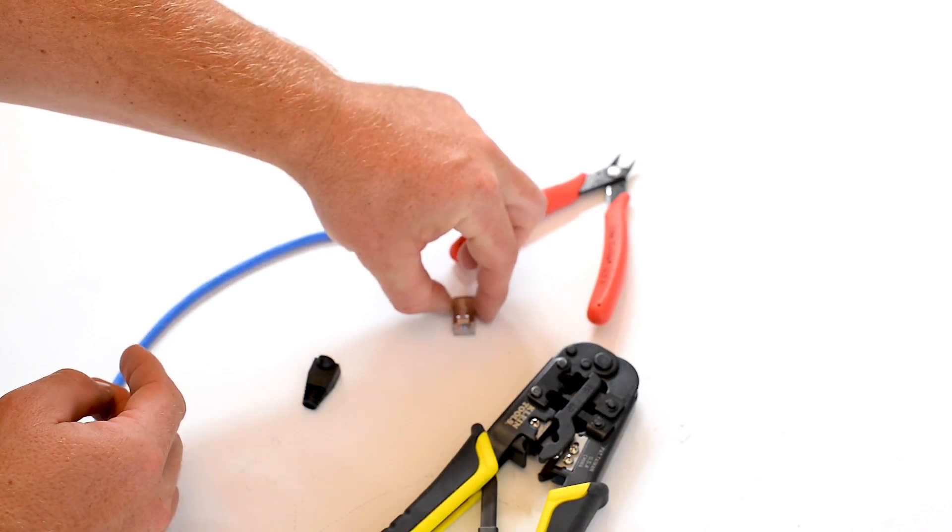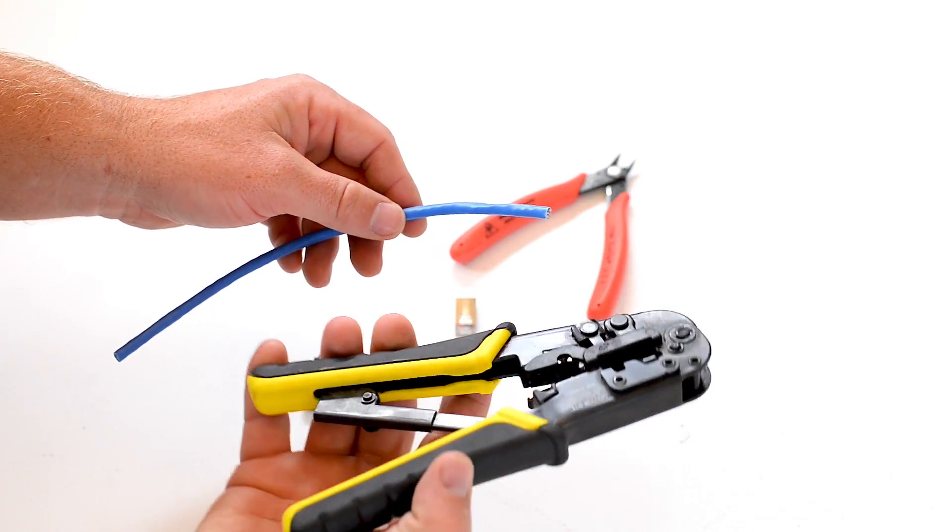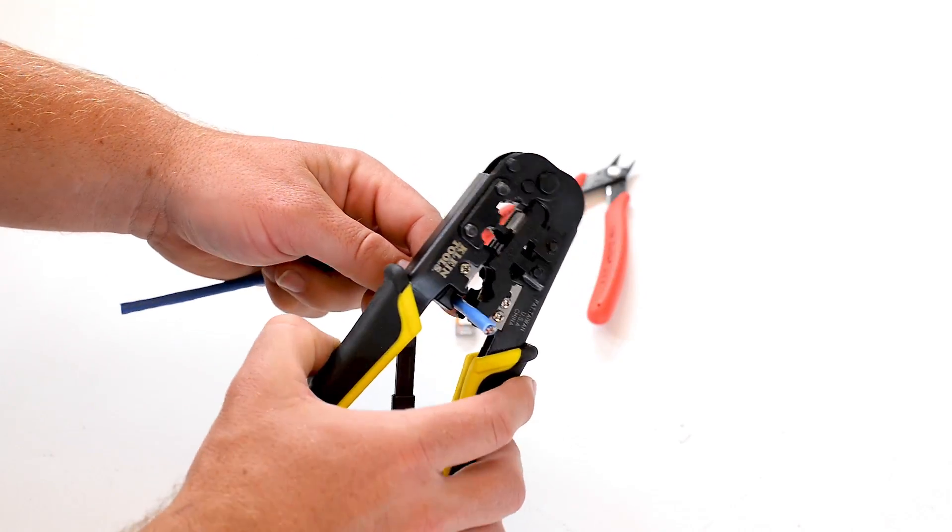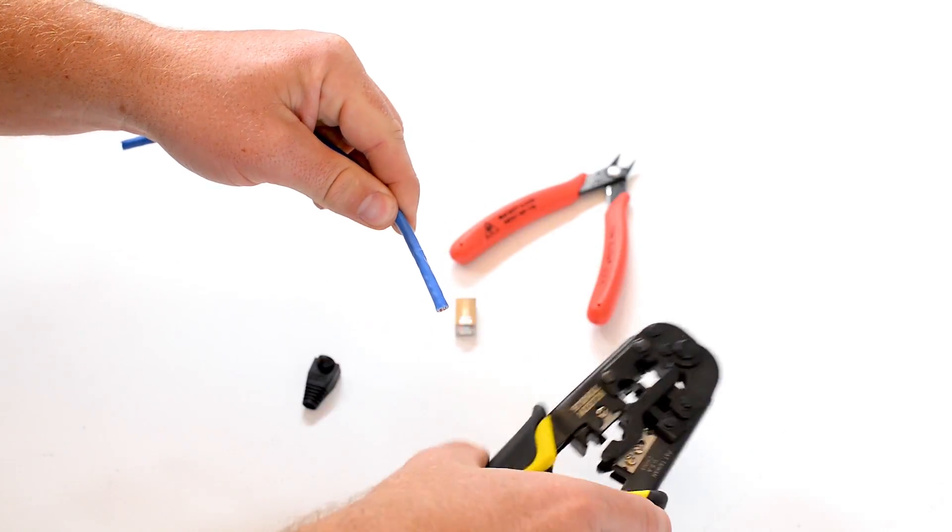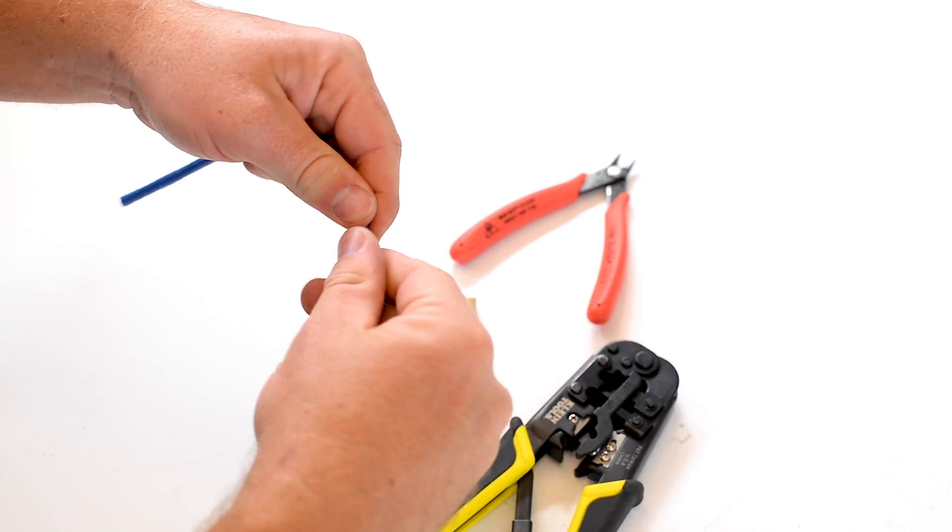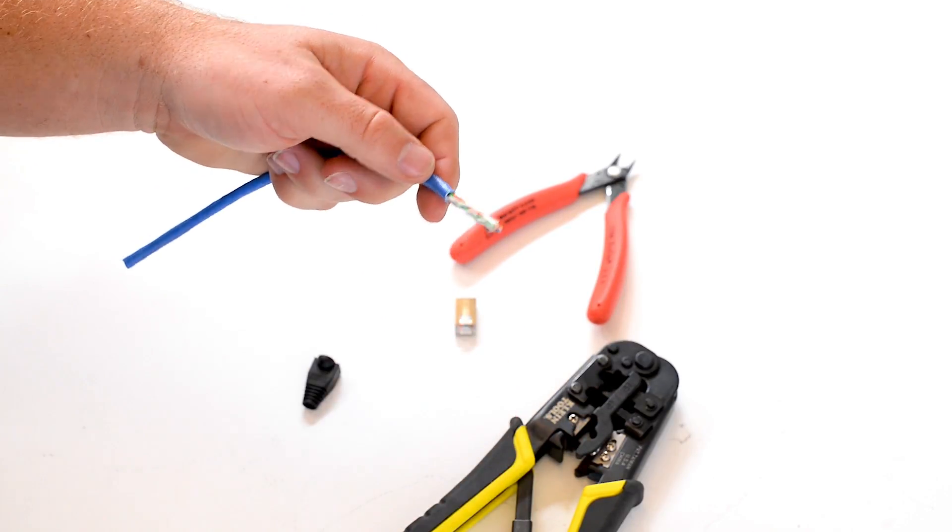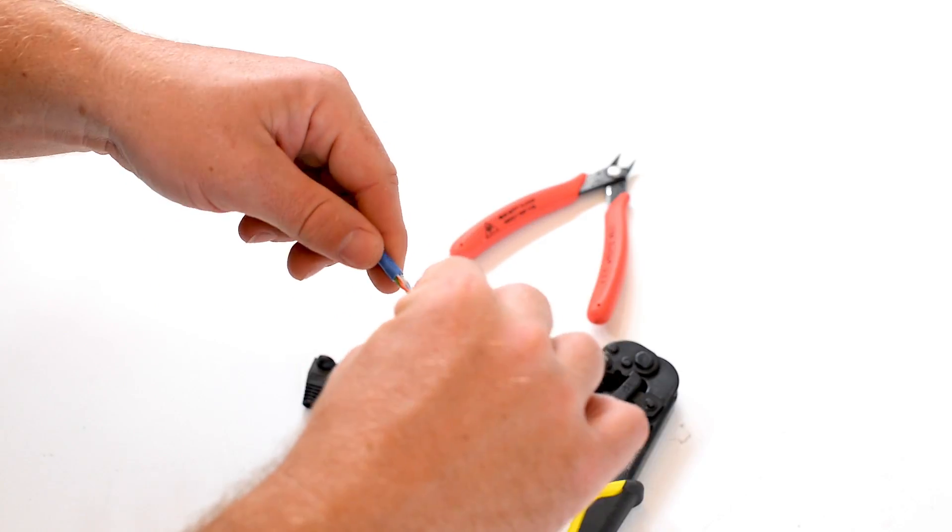The first thing we need to do is actually strip the insulating jacket off of our network cable. In this case, the crimper that we are using has the ability to strip this jacket. So you can see here we are going to twist that jacket off, taking care not to cut too deep that we are actually cutting the individual wire pairs past that jacket.